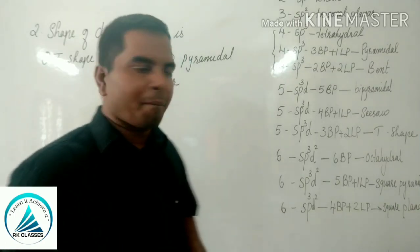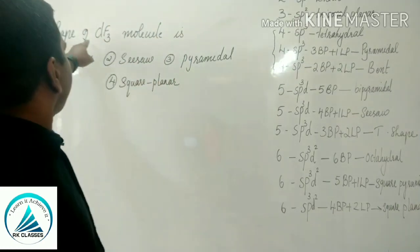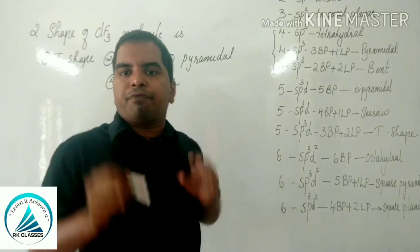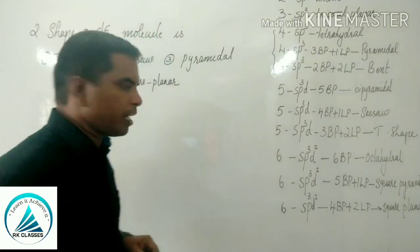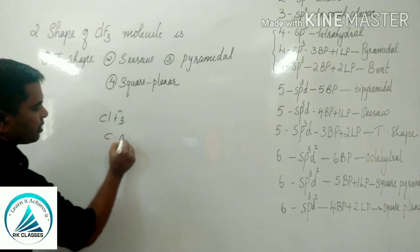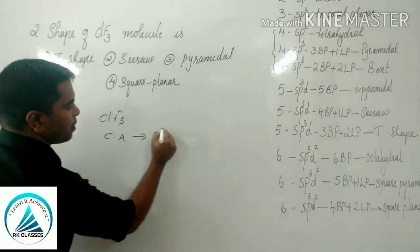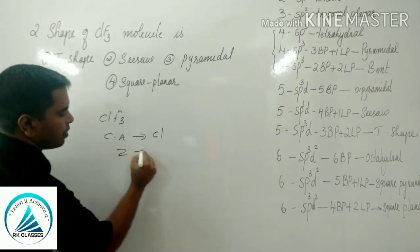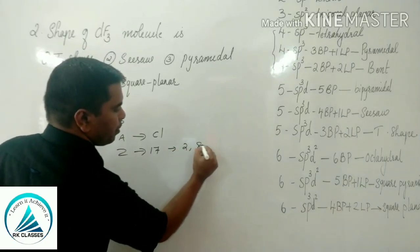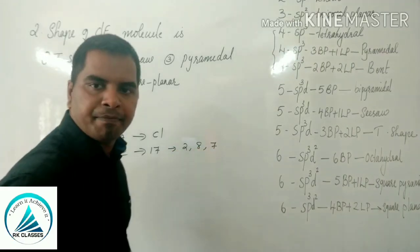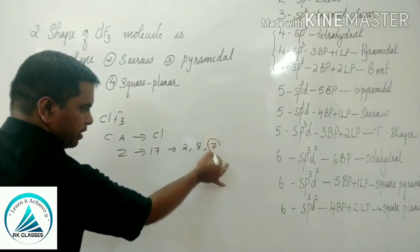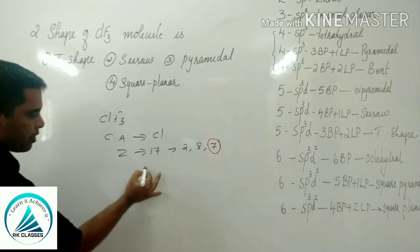Second question: what is the shape of the ClF3 molecule? The central atom here is chlorine, atomic number 17, electronic configuration 2,8,7. There are 7 electrons in its valence shell.